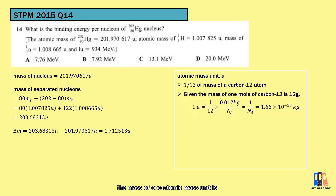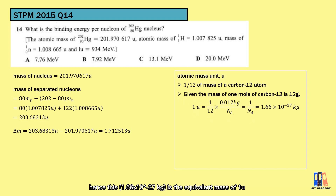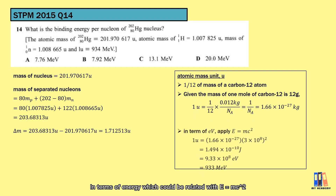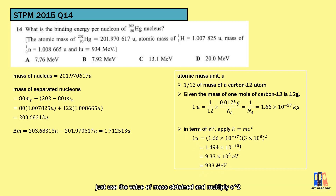Based on the definition, the mass of one atomic mass unit is 1/12 multiplied by the mass of one mole of carbon-12, which is 0.012 kg, divided by Avogadro's number. This gives the equivalent mass of 1 U. In terms of energy, using E = mc², we multiply the mass of 1 U by c² and obtain the equivalent energy of around 933 MeV.